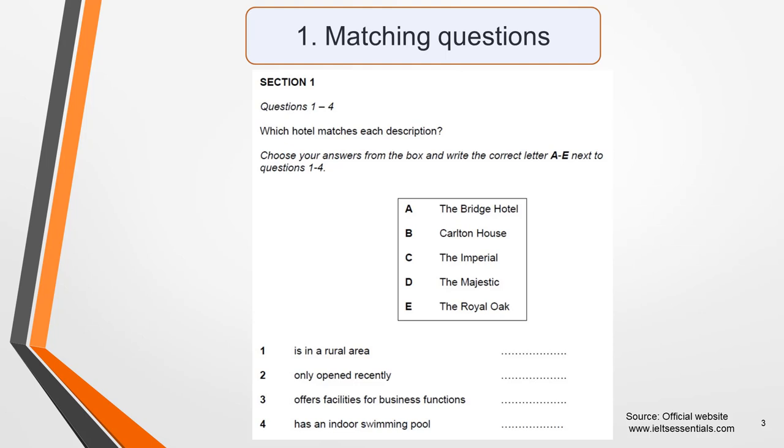In this sample question, for example, you must match the hotels A to E with the descriptions 1 to 4. Expect synonyms and paraphrasing to be used. For example, in the recording the speaker might say that the hotel is located in the countryside or away from the town, rather than it's in a rural area.